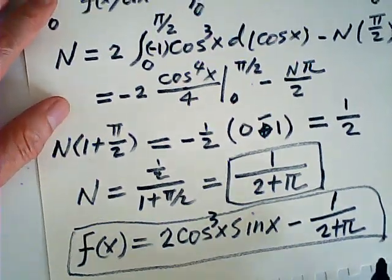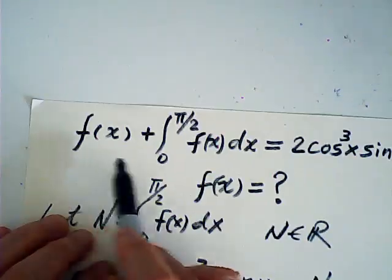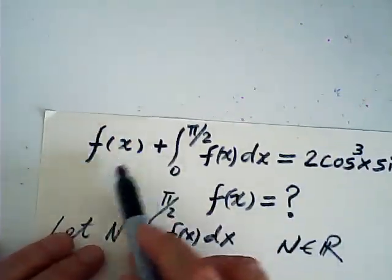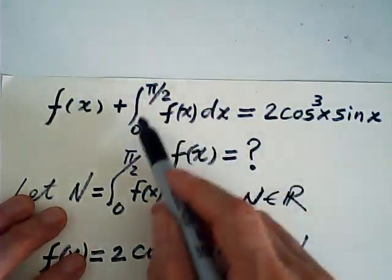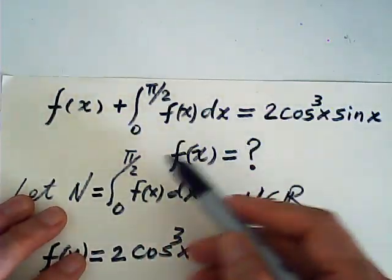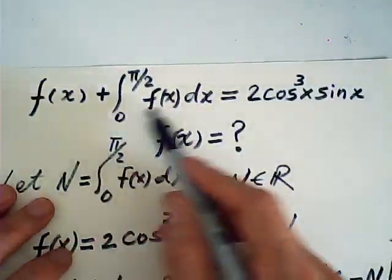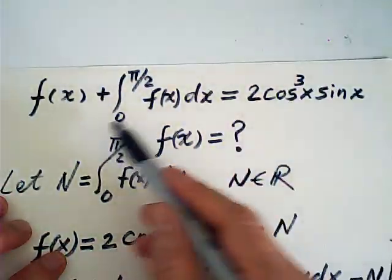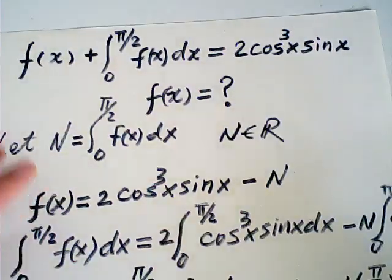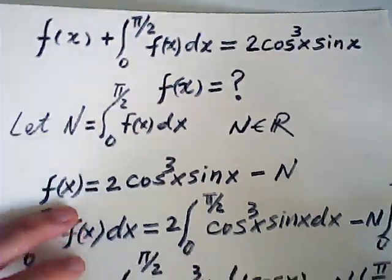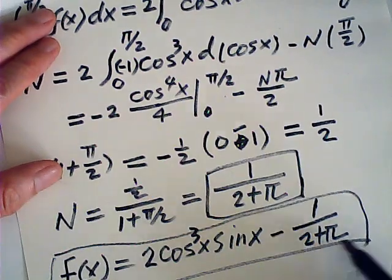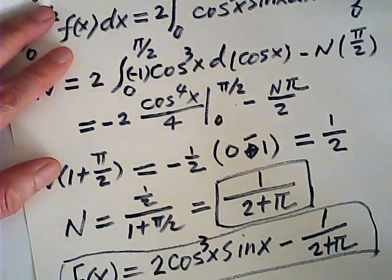Now we can verify. Verify for this one, right? f of x is this, then this is N. N is this. Then we just verify both sides are equal. I leave the verification to yourself. That is the result of f of x we are looking for.